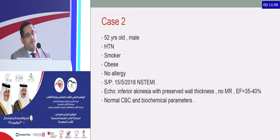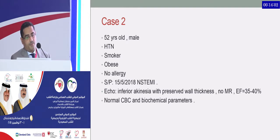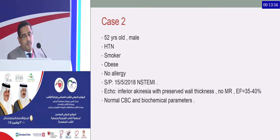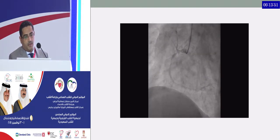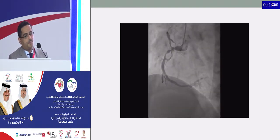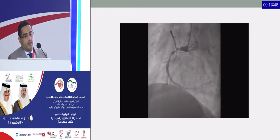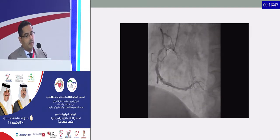The second patient is a 52-year-old male, hypertensive, smoker, obese. He had an attack of angina before five months. He showed inferior akinesia with basal wall thickness. Ejection fraction was 35 to 40 percent. The angiogram showed ectatic RCA with proximal significant stenosis.